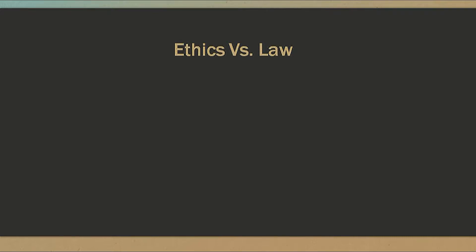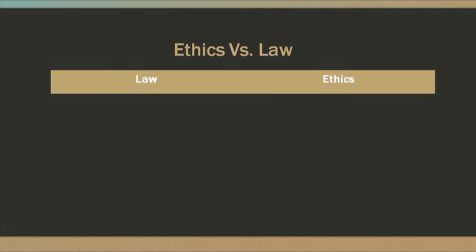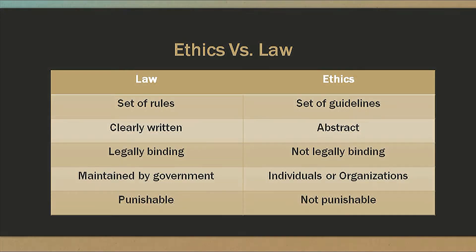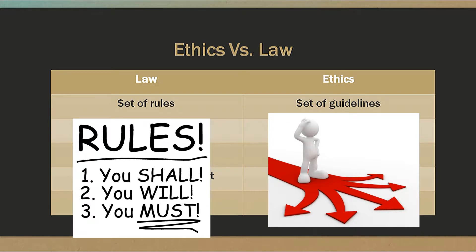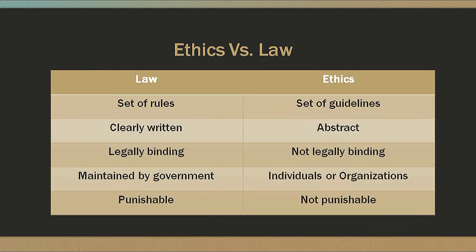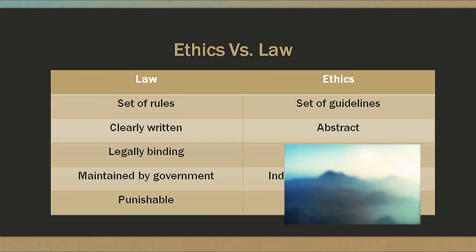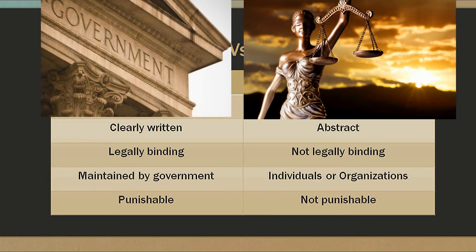Now, don't we have laws for that? Like, just follow the law? Yes, we do have laws, but ethics and law are different. Ethics is a set of guidelines, while law is a set of rules. Laws are clearly written, whereas ethics is abstract and vague. Law is legally binding and maintained by the government.